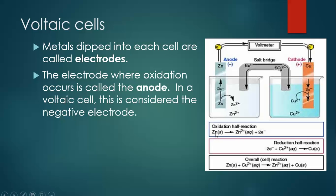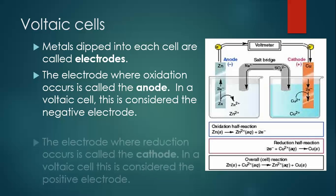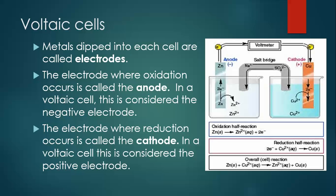What happens is the zinc metal loses electrons and becomes Zn²⁺. Instead of the zinc actually being in with the copper solution, it's in a separate container, and what that does is it forces the electrons to travel across the wire. Instead of being able to directly react in the same container, the electrons are forced to pass through the wire. Then in the other cell, we have the electrode — in this case it's copper — where reduction occurs, and it's called the cathode. In a voltaic cell, this is considered the positive electrode. So we have our negative anode and our positive cathode.